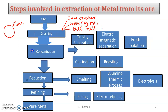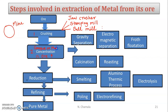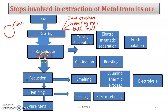After crushing, the next step is concentration. Concentration is the process in which we increase the percentage of ore. We do this by removing the unwanted rocky impurities called gangue, also called matrix. The process of removal of gangue or matrix from its ore is called concentration.